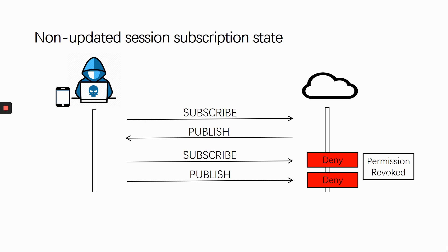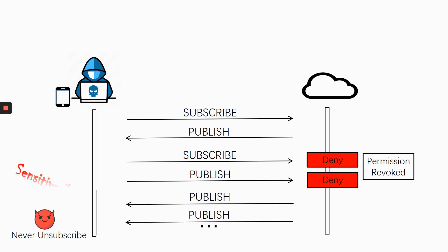However, we found that the MQTT specification provides no guidance on updating session states in response to a client's privilege change. So if the attacker just keeps the connection, the subscription session will be maintained by the server, and the server will still push messages from the topic to the attacker even though the device is used by another user. Later, I will show you the consequences of leaking IoT device messages.